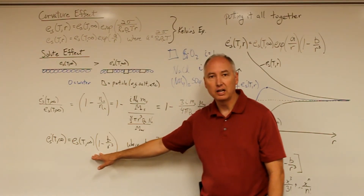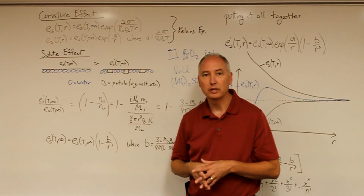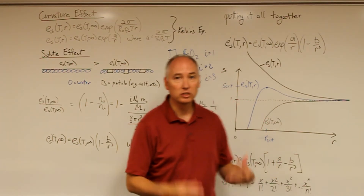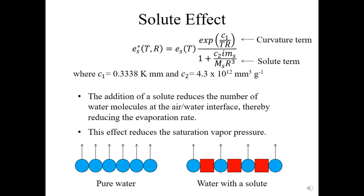We can now combine the solute effect with the curvature effect to give the saturation vapor pressure over a curved surface of a solution droplet — what we actually have in the atmosphere. While curved surfaces make it more difficult for embryonic droplets to form, adding impurities makes it easier. We denote this as E-sub-s* of T and R — the asterisk indicating impurities in the droplet. It equals E-sub-s of T times a correction factor with the curvature term in the numerator (the exponent of C₁/TR, where C₁ = 0.3338 K per micrometer) and the solute term in the denominator (one plus C₂ · i · m-sub-s / M-sub-s · r³, where C₂ = 4.3×10¹² μm³/g).